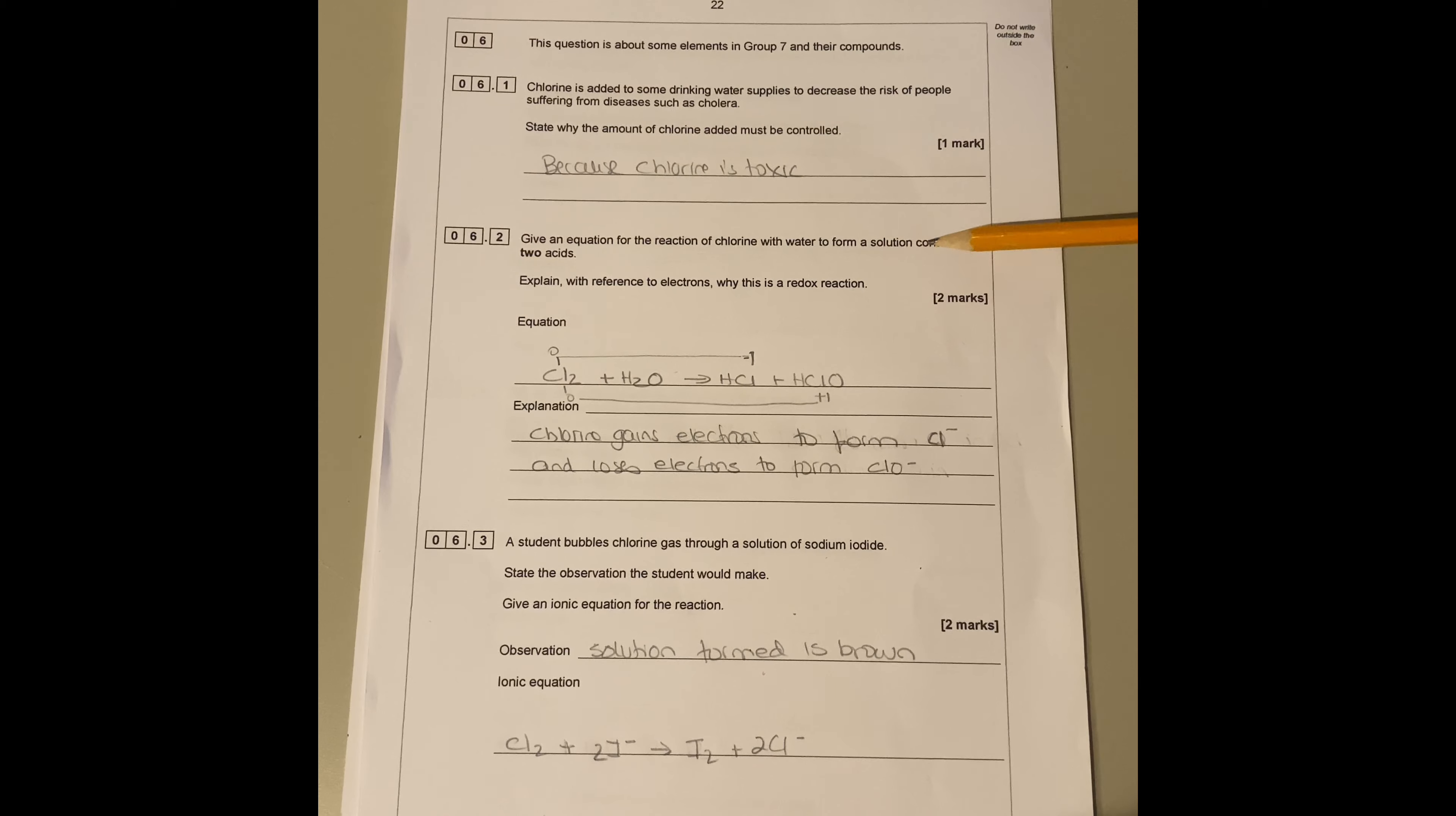Give an equation for the reaction of chlorine with water to form a solution containing two acids. Explain with reference of electrons why this is a redox reaction. The equation is Cl2 plus H2O goes to HCl plus HClO. It goes from zero to minus one, and here chlorine oxidation number zero to plus one. But we can't talk about oxidation numbers because they want it in terms of electrons. Chlorine gains electrons to form chlorine minus, and then chlorine loses electrons to form ClO minus. That's why you talk about electrons here.